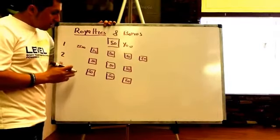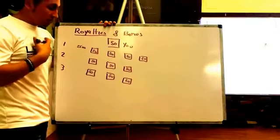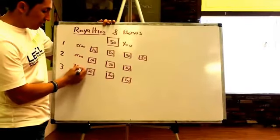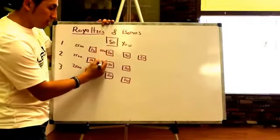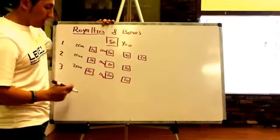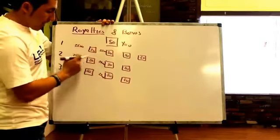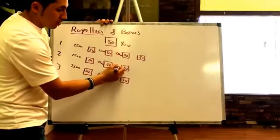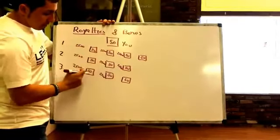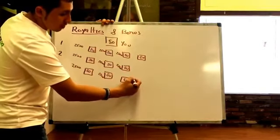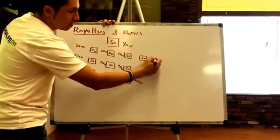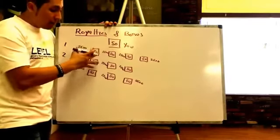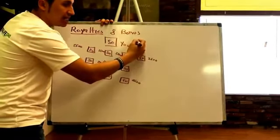Each supervisor makes 2,500 volume points — so we have 5,000, 10,000, 15,000, 20,000 volume points. Let's say all 10 of them make 2,500 volume points each. This is about the average of what people do in volume points. In order for you to get paid the royalties, as a supervisor you have to make at least 2,500 volume points yourself.